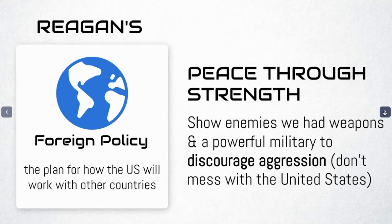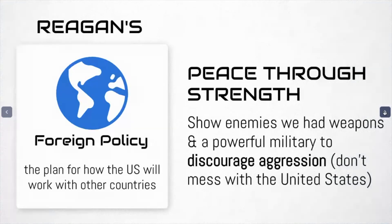Let's shift to foreign policy. Reagan's foreign policy is called peace through strength, and it's kind of just like it sounds. Reagan's plan was to show our enemies in the world that we had lots of weapons and a big military ready to use them. Military strength is a symbol that it would be foolish to mess with us — the goal is to discourage any aggression towards the United States.